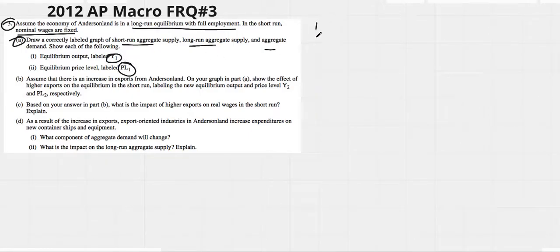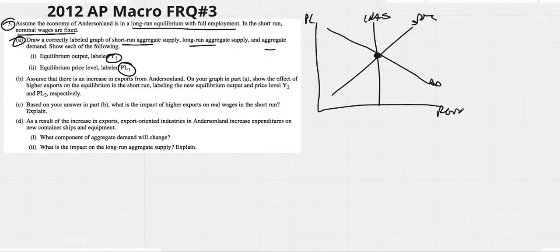So we're in long-run equilibrium. Aggregate demand, short-run aggregate supply, that's supposed to be full employment. There we go. Price level, real GDP. What did they say? PL1, Y1.